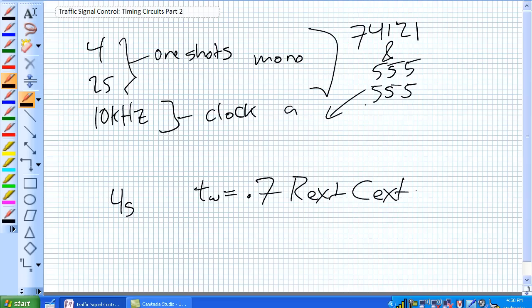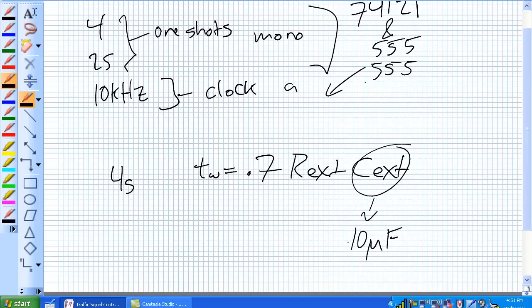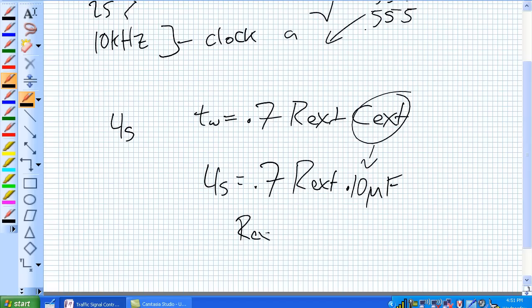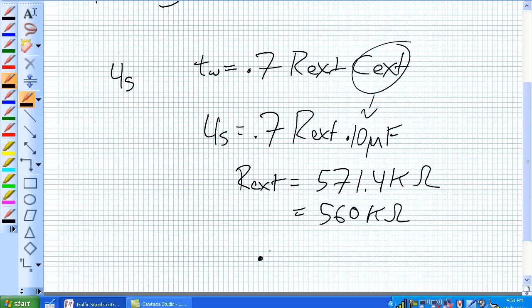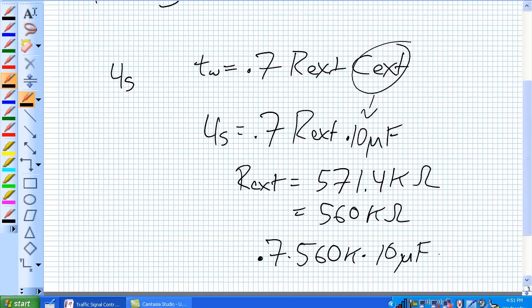We want to make one that is four seconds long. Let's just grab a 10 microfarad capacitor out of the box. Four seconds, 0.7, what's my R external that I need? Our external should be 571.4 kilo-ohm resistor. Is there really such a thing as a 571.4 kilo-ohm resistor? No, there isn't. The closest one you can get is a 560 kilo-ohm resistor. 0.7, 560K times 10 microfarads, close enough, 3.9 seconds, good to go.